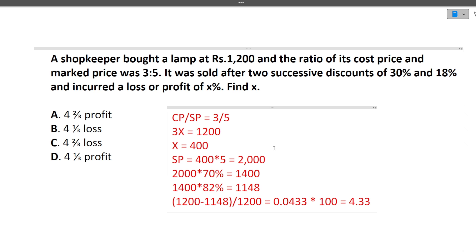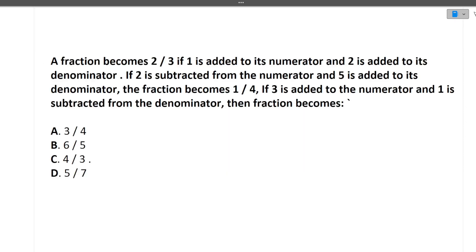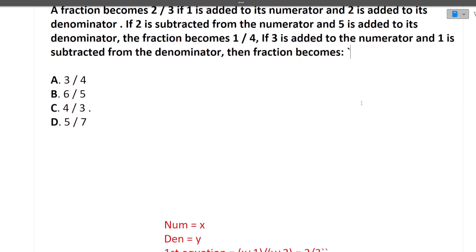Now let's move towards the next question. A fraction becomes 2 by 3 if 1 is added to its numerator and 2 is added to its denominator. If 2 is subtracted from the numerator and 5 is added to its denominator, the fraction becomes 1 by 4. These are the two equations given to us.